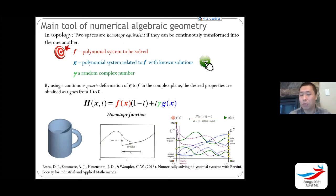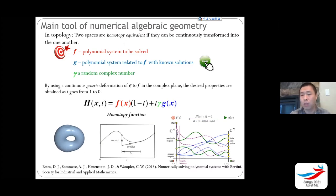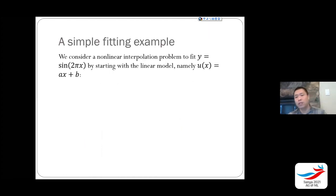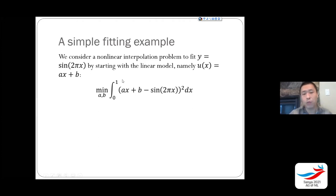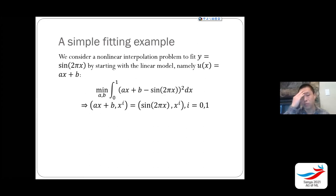We can use this same idea to solve optimization problems. Starting with a simple fitting example: I want to fit y = sin(2πx). Starting with a simple linear model with only two parameters, you formulate this as a least squares problem — you minimize the distance between the model and data. Since you have a linear model, you have an analytical solution by testing basis functions x_i = 0 or 1 and forming a two-by-two matrix.